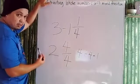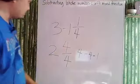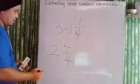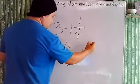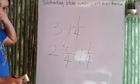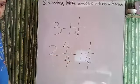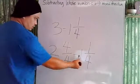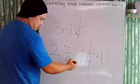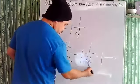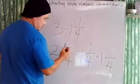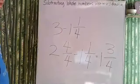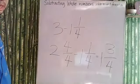So three becomes two and four-fourths. Now we subtract one and one-fourth from two and four-fourths. We subtract the whole numbers first: two minus one is one. Then for the fractions, we keep the denominator four and subtract the numerators: four minus one equals three. So our answer is one and three-fourths.